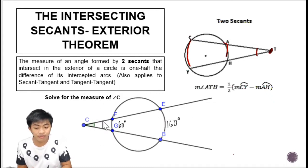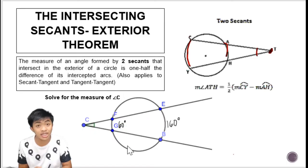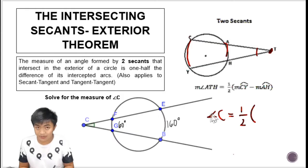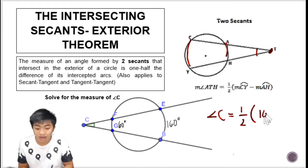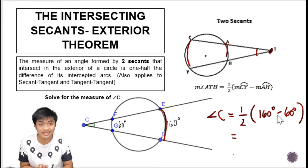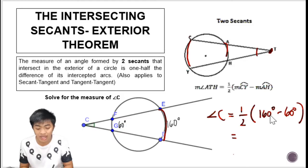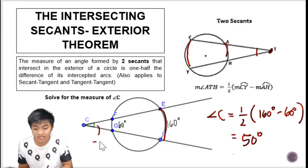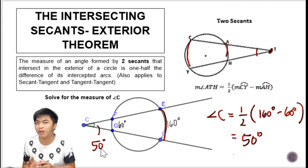Let's have an example where the measure of the angle is unknown but the two intercepted arcs are given. To get the measure of the angle, that is one half the difference of the arcs. The bigger arc measures 160 degrees and the smaller arc measures 60 degrees. So 160 minus 60 is 100 degrees, and one half of 100 degrees is 50 degrees. The measure of angle C is 50 degrees — very straightforward.